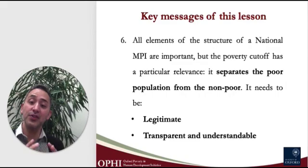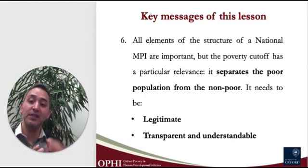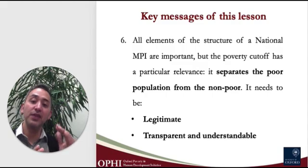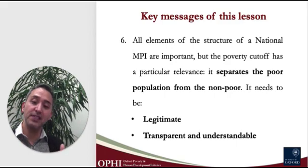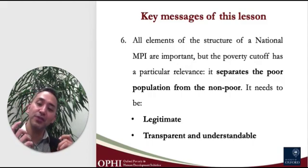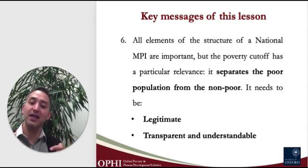As an example, in a national MPI that has four dimensions, it is easy to understand and communicate a poverty cut-off of 25%, because it very transparently reflects the fact that somebody is identified as being poor if they are deprived in weighted deprivations equivalent to one dimension or more. In that case, a poverty cut-off of 33% is not easy to communicate and is much less easy to understand. With this in mind, it is now time to precisely review some communicational aspects of the process of developing the national MPI, and we will turn to the presentation of some concrete examples of how countries present the processes that led to the national MPI as well as the results.